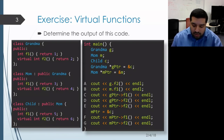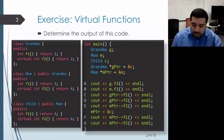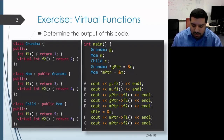Let's go ahead and take a look at the code. We have a grandma, a mom, and a child object. And we have a couple of pointers — one whose type is grandma star and the other one whose type is mom star.